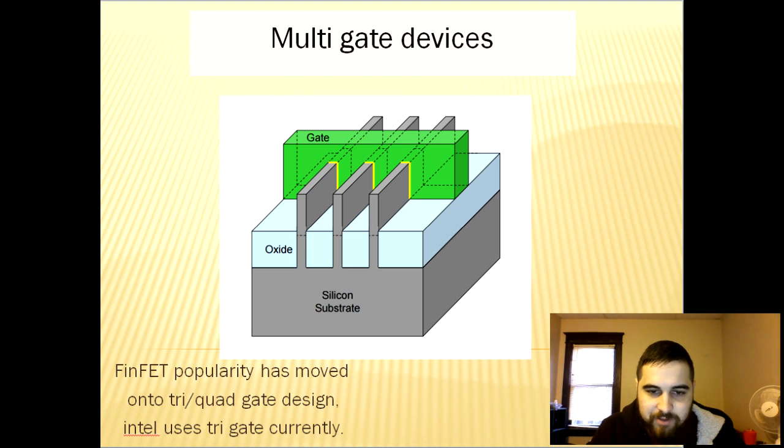Intel began using FinFET design in 2012 for commercial release but they've always had interesting changes to design. For example, their FinFET shape was triangular which was speculated to have a higher structural strength or a higher area to volume ratio than other designs which would increase switching performance. The Ivy Bridge CPU was being worked on around 2002 and onward but it took them around a decade to work out fabrication and mass production issues.